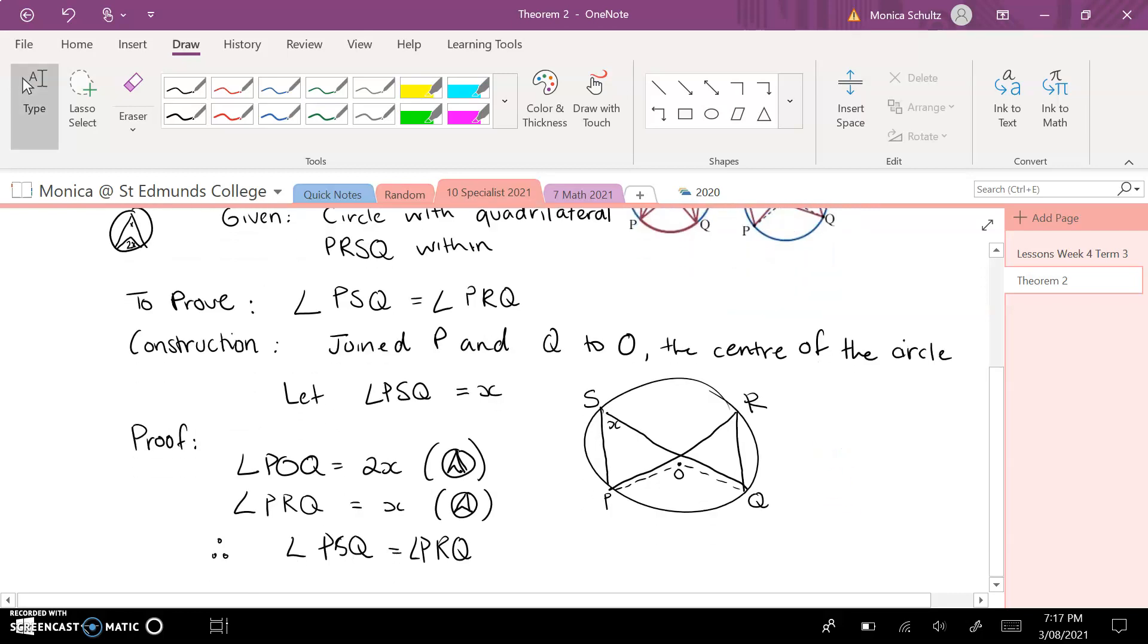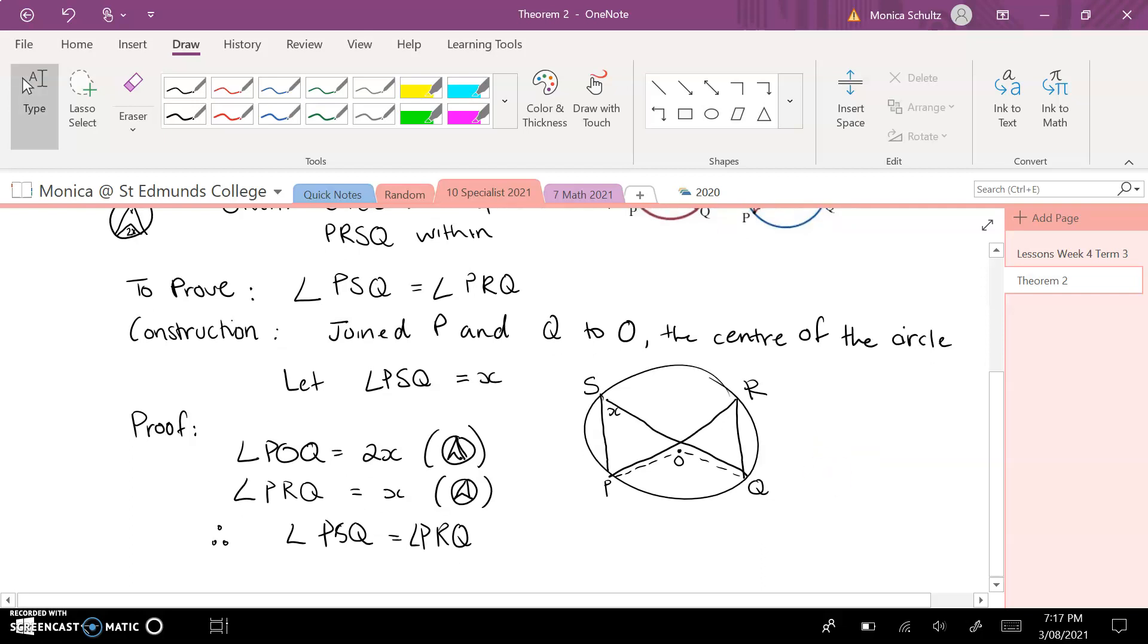So then I rewrote this down here and drew my diagram again, obviously not very pretty, because I'm writing on my screen, and I've called the angle PSQ X. So the proof relies heavily on theorem 1, and it is basically that because PSQ is connected to the arc of POQ, and that would make POQ 2X.